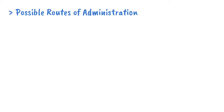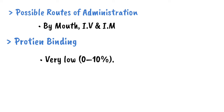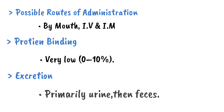Possible routes of administration: by mouth, intravenous, and intramuscular. Protein binding is very low at 0–10%. Excretion is primarily through urine, then feces.